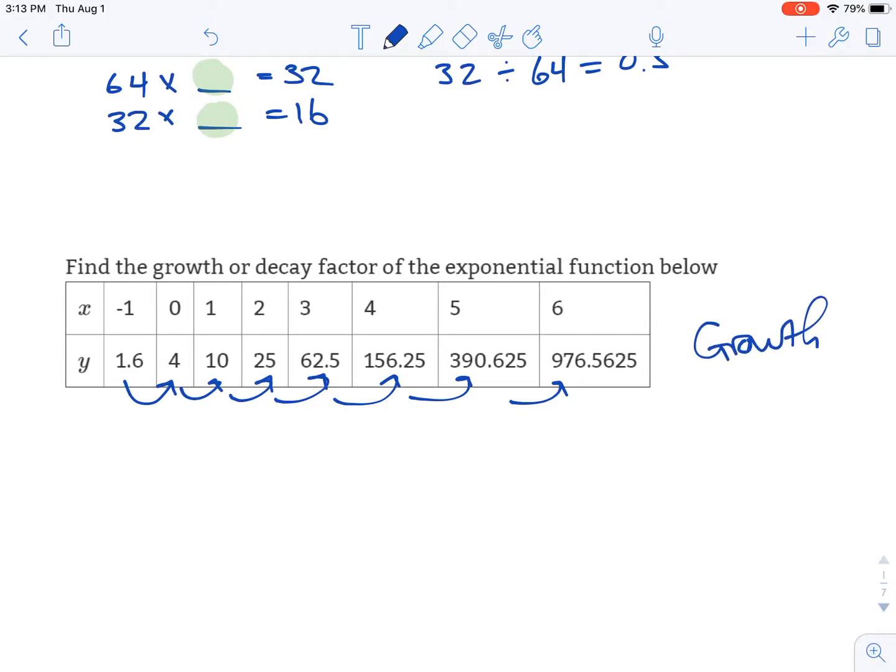To figure out the growth factor, we just figure out what we're multiplying here to go from 1.6 to 4, or 4 to 10, 10 to 25, etc. So just use division to undo that.